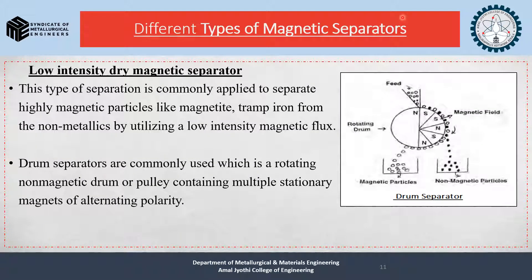Low intensity dry magnetic separators: this type of separation is commonly applied to separate highly magnetic particles like magnetite — for example, tramp iron from non-metallics — by utilizing a low intensity magnetic flux. Drum separators are commonly used, consisting of a rotating non-magnetic drum or pulley containing multiple stationary magnets of alternating polarities.